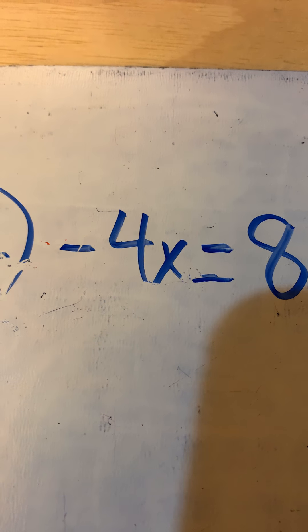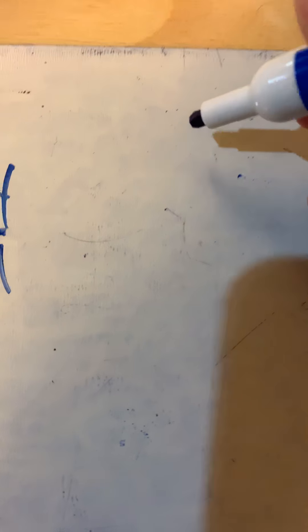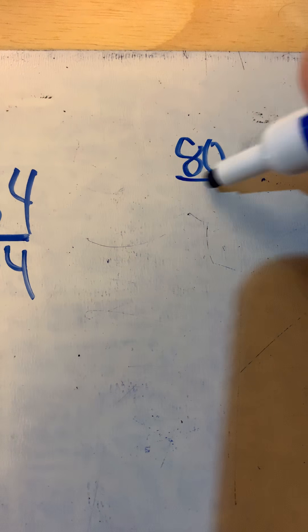And whatever you do to one side of an equal sign, you have to do to the other side of an equal sign. So we have to do 84 divided by negative 4.